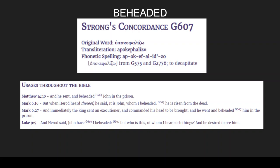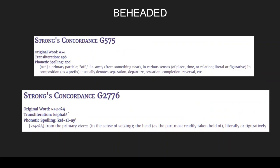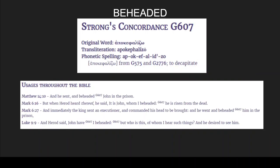Just for consistency's sake, looking at the concordance number, it says it's from G575 and G2776. G575 means 'off or away' — like the head is off — and G2776 is in the sense of seizing the head, or 'take hold of the head.' So basically 'off with the head' — that's where decapitation comes from. It's very clear that G607 carries that meaning.